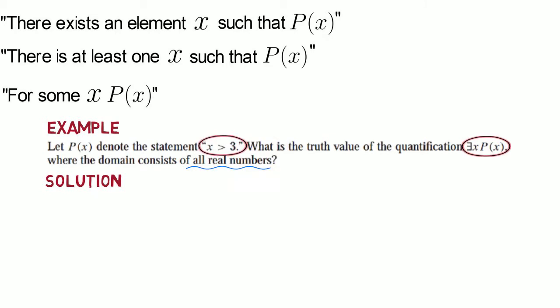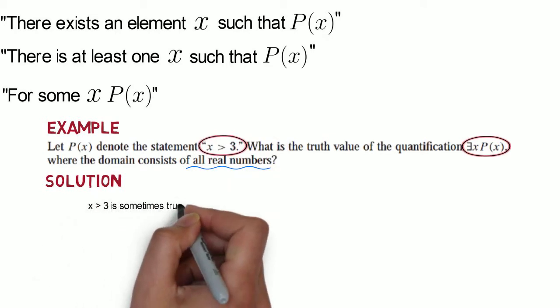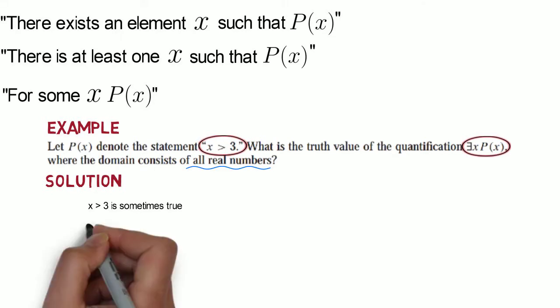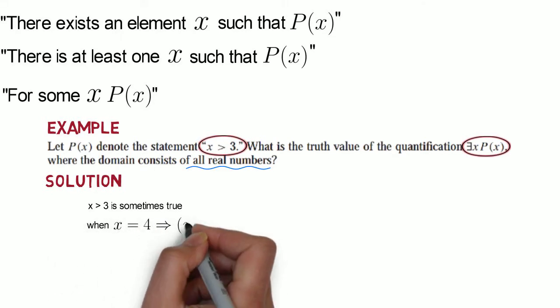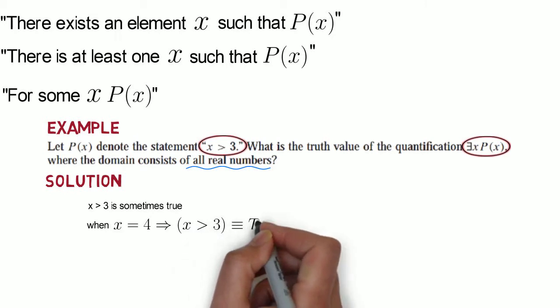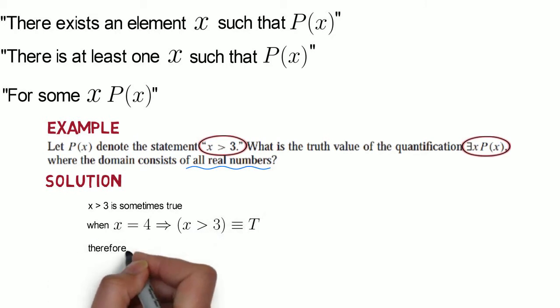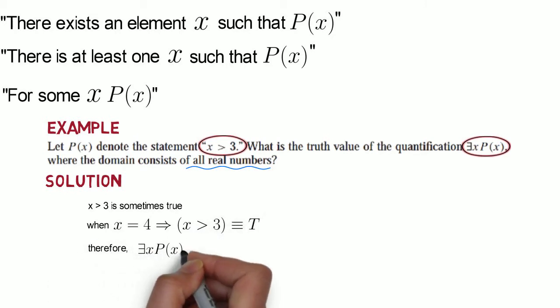x > 3 is true in some cases and false in other cases. For instance, when x = 4, x > 3 is true and hence, the existential quantification of P(x) is true. Notice that P(x) can be false for other values in the domain, but according to the definition, if P(x) is true for at least one value in the domain, then the entire quantification is true.